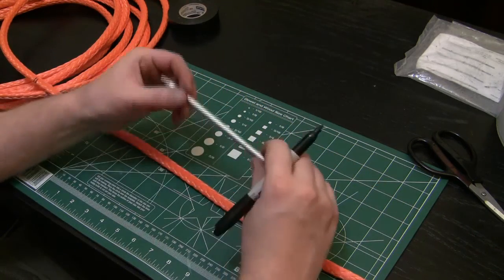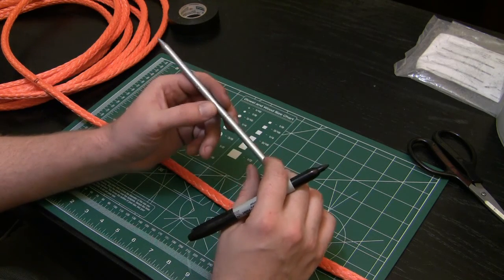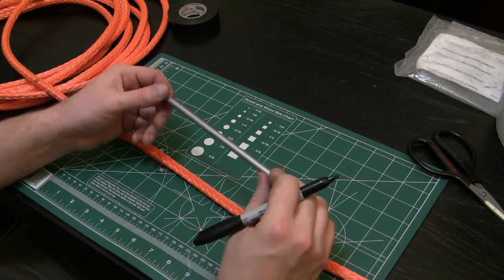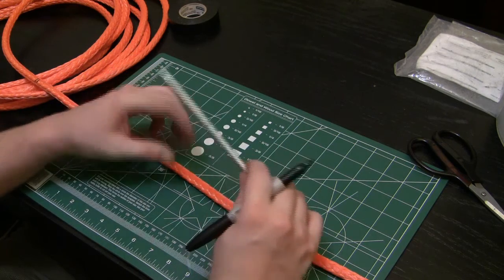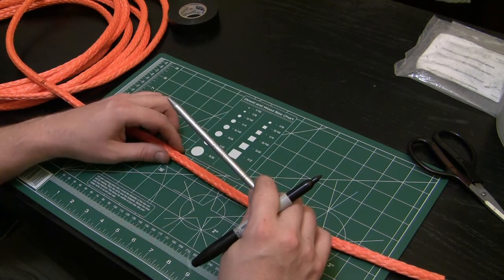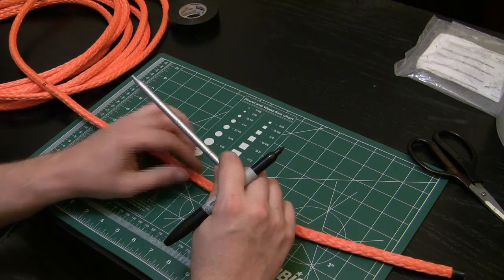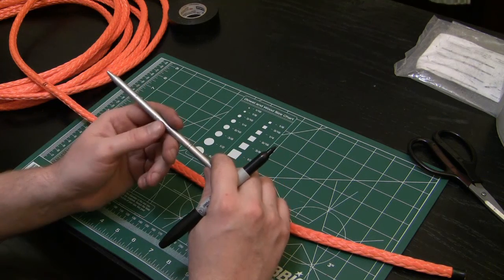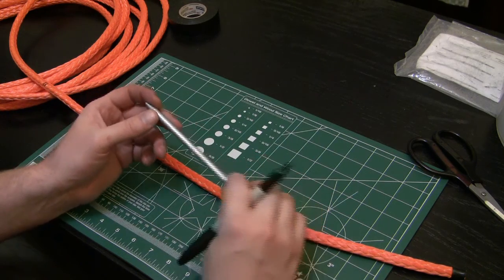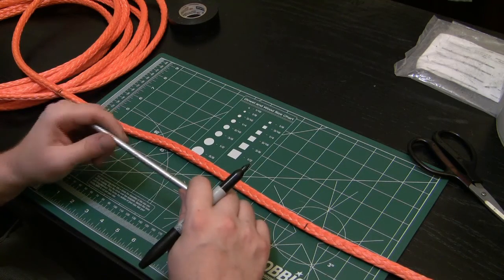As I was going over in the splice kit video, this fid is just about eight inches long and you need to measure three fids. Three times eight is 24 inches. An easy way to remember this: three-eighths is the size of your rope, three is the number of fid lengths that you need, and eight inches is the number of inches that your fid is. Multiply them together and that gives you your 24 inches for your berry.